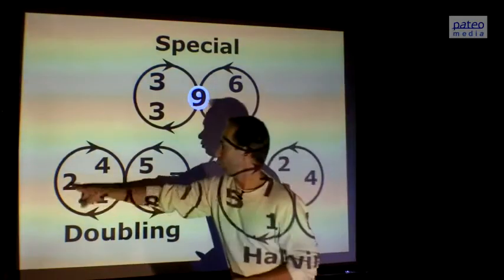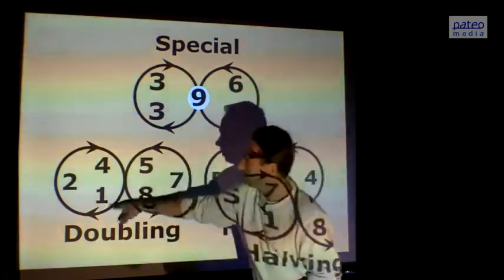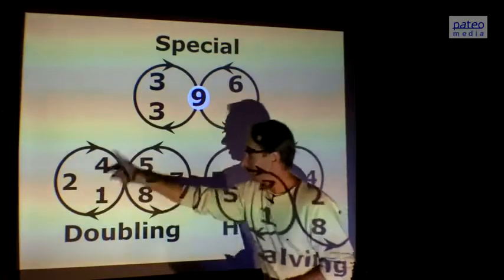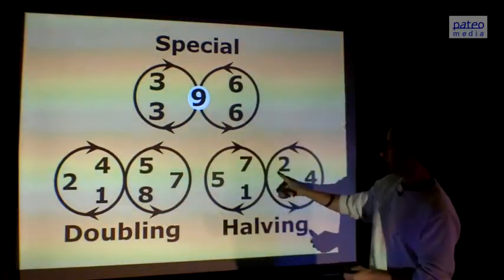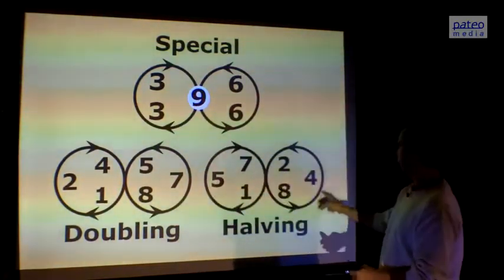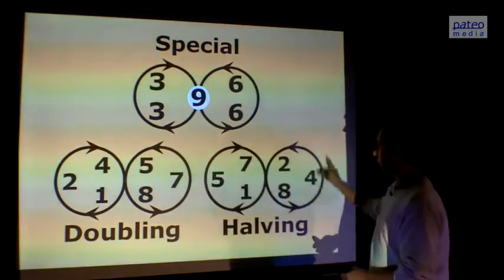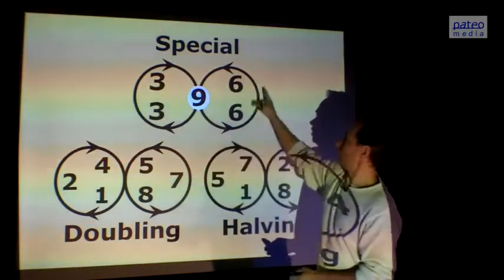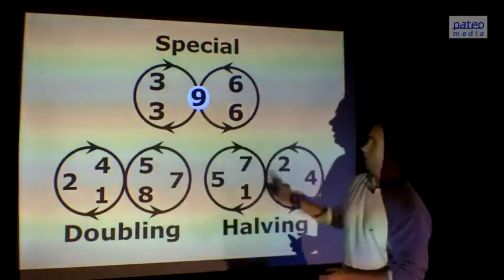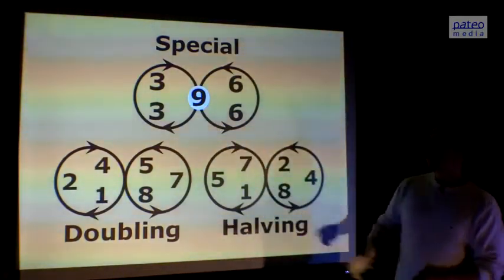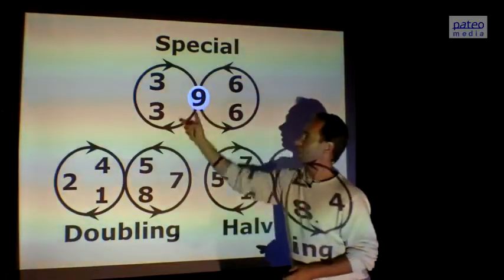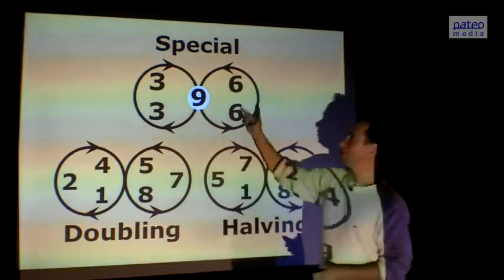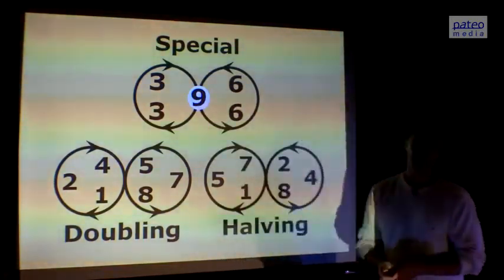Here we see them visualized as lemniscates. This is the rhythm of 1, 2, 4, 8, 7, 5. This is the doubling sequence. This is the other one: 1, 5, 7, 8, 4, 2, the other way around. And here we have 9, 3, 3, 9, 6, 6, and so on. Nine is in the center. Nine is the most important number. This is already special, but the 9 is the most special.